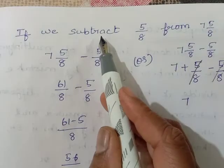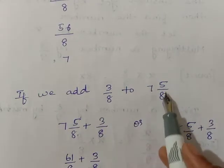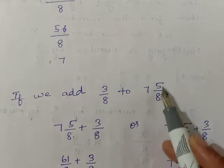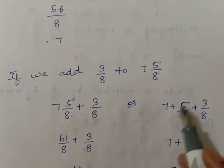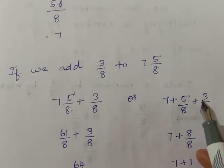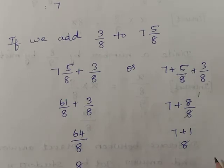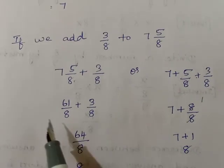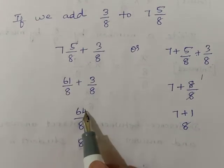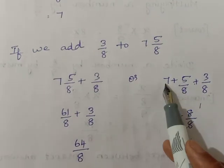By subtracting 5 by 8 we got the nearest whole number 7. Now we will add. If we add 3 by 8 to 7 and 5 by 8: 5 plus 3 gives 8, and 8 by 8 cancels to 1. So 7 plus 1 equals 8, which is the nearest whole number. You can also verify: 61 by 8 plus 3 by 8 gives 64 by 8, and 8 divides 64 eight times. You should understand that 7 and 5 by 8 means 7 plus 5 by 8.